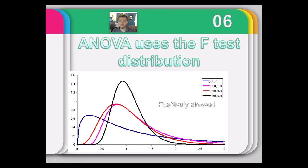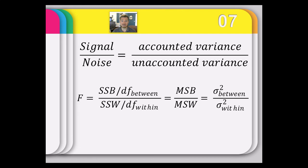The F-test is basically a signal-to-noise ratio. In the numerator, you're asking: how much variance can you explain by knowing what group someone belongs to? People differ — there's variance in their measurements of height, weight, GPA, or IQ. The hypothesis for the F-test is that knowing group membership will predict something and explain variance. If you know someone is a psych major, a business major, or a finance major, those things predict their GPA.